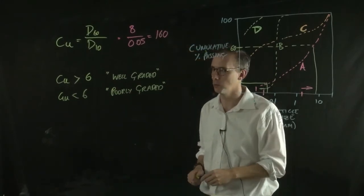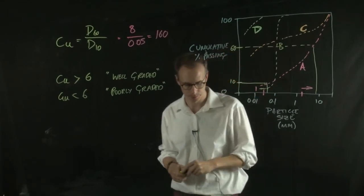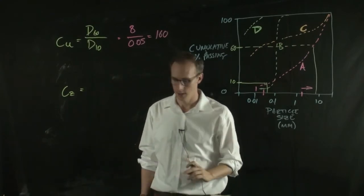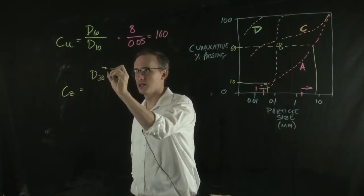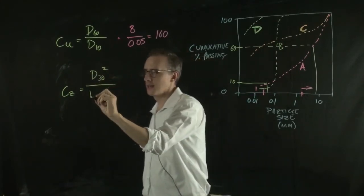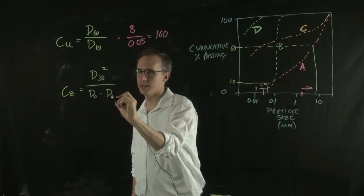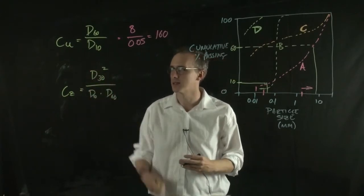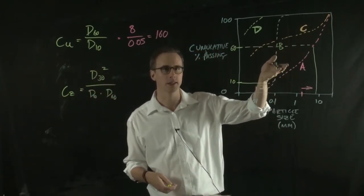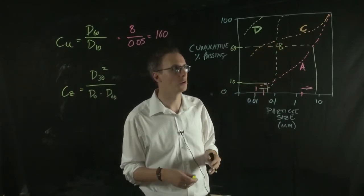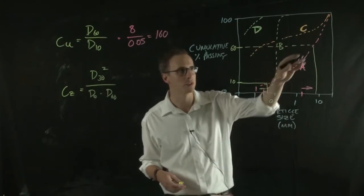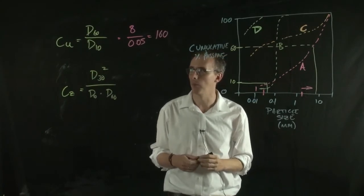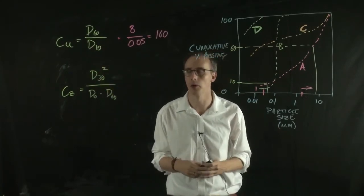The coefficient of curvature, Cc, is your d30 squared over your d10 multiplied by your d60. The difference between these two is that coefficient of curvature is really trying to understand if there's any sort of dramatic changes within your particle size distribution. Things like gap graded soils—it can be quite useful to do a coefficient of curvature. It's giving you a point within this that gives you a little bit more information.